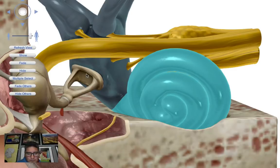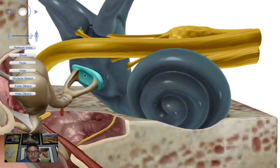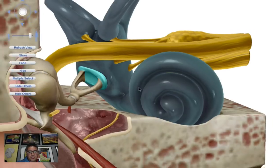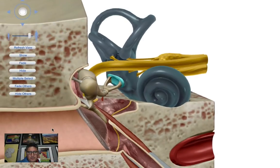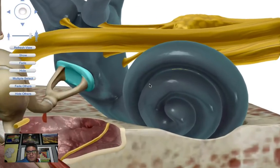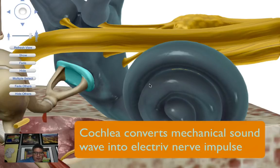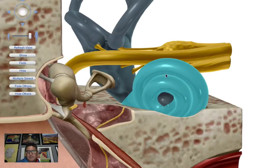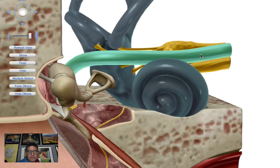The fluid inside, as that oval window vibrates because of the sound pressure or the wind pressure from the external acoustic meatus and the tympanic membrane vibrating, that pressure builds up and it causes waves in the cochlea. Those waves also move tiny little hairs that are all over the cochlea, and those tiny little hairs cause nerve impulses that are also sent to the brain.